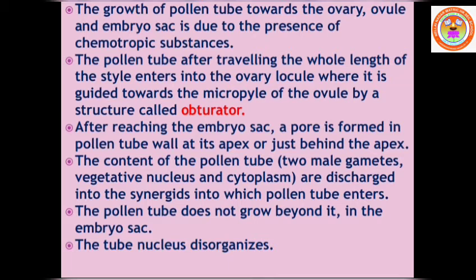The micropyle is a small opening of the ovule. After reaching the embryo sac, a pore is formed in the pollen tube wall at its apex or just behind the apex. The tip of the pollen tube contains two male gametes. The contents of the pollen tube — two male gametes, vegetative nucleus, and cytoplasm — are discharged into the synergids and released into the embryo sac.